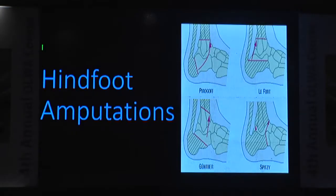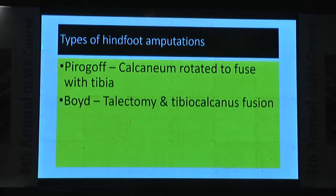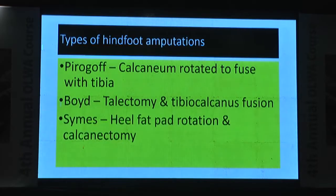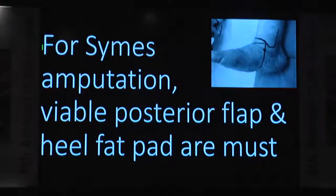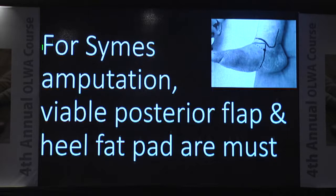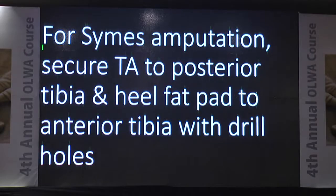The last part is hindfoot amputations. The most important is Pirogov, where the calcaneus is rotated to fuse with the tibia and screws are placed. Boyd involves talectomy and tibio-calcaneus fusion. Symes involves rotating the heel fat pad and performing calcanectomy. For Symes amputation, a viable posterior flap and viable heel fat pad are mandatory; if the heel fat pad is not viable, proceed to below-knee amputation. Secure the tendo Achilles to the posterior tibia with a drill hole, and secure the heel fat pad to the anterior tibia with a drill hole.